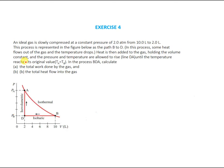Let's begin to solve the question. An ideal gas is slowly compressed at a constant pressure of 2 atm from 10 liters to 2 liters. The gas is slowly being compressed at a constant pressure of 2 atm. Looking at a PV diagram, constant pressure means you expect a horizontal line. The initial volume is 10 liters and the final volume is 2 liters.